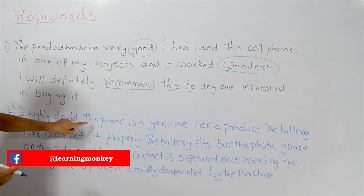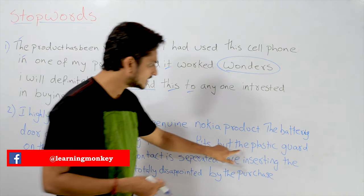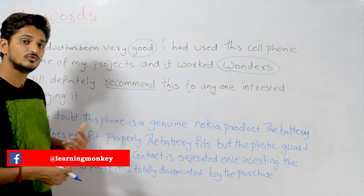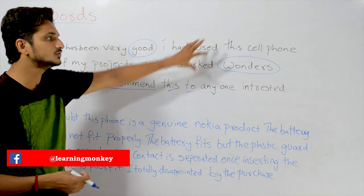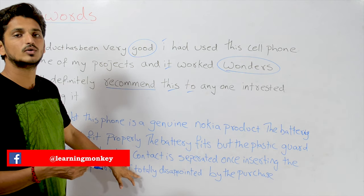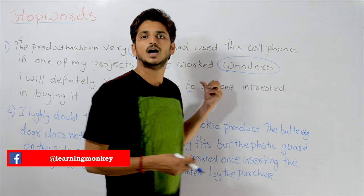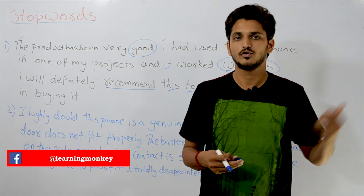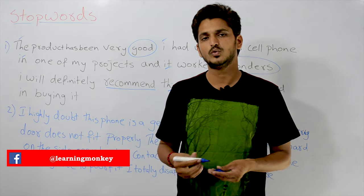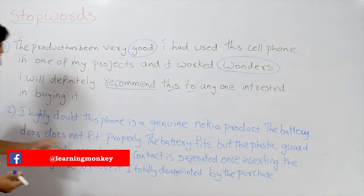Check the negative feedback also. Words like 'this', 'a', 'is', 'but', 'the', 'once', 'by' — even in negative feedbacks, these are commonly used words. That's why we have to eliminate the stop words before analyzing our text data, before giving this text data into our ML models. We have to eliminate stop words.